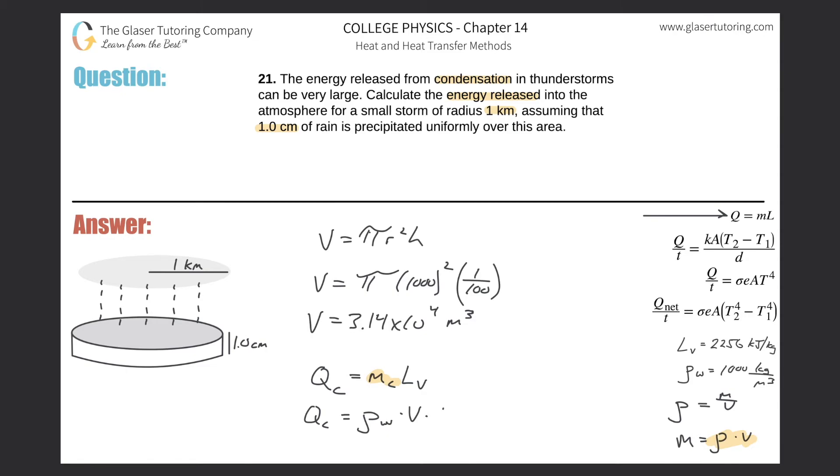Then multiplied by the latent heat of vaporization, which is another constant you're supposed to look up or memorize, specific for water. Let's plug everything in: density is 1000, multiplied by the volume in cubic meters.